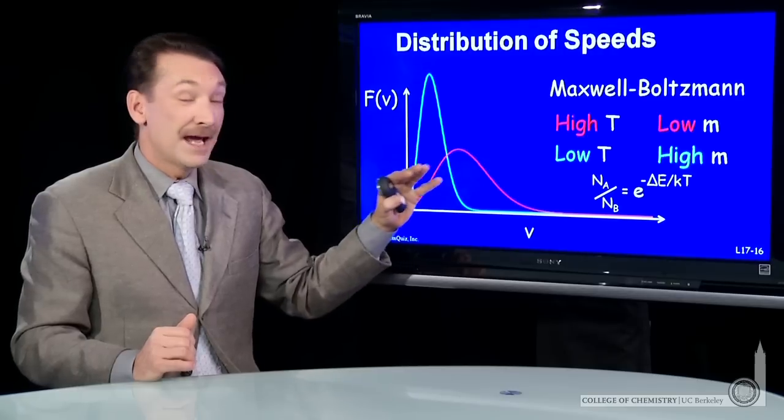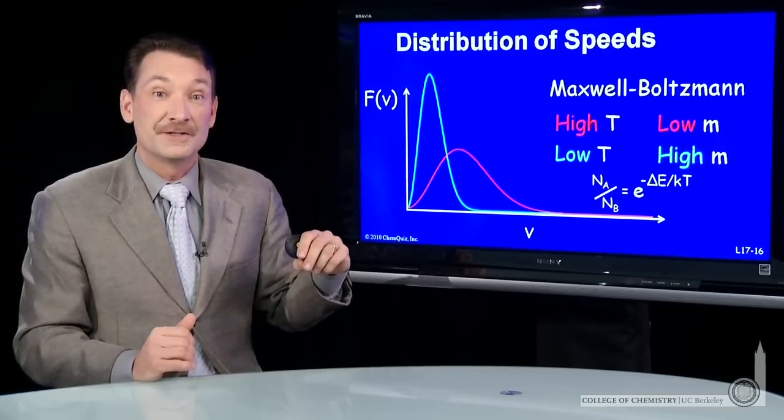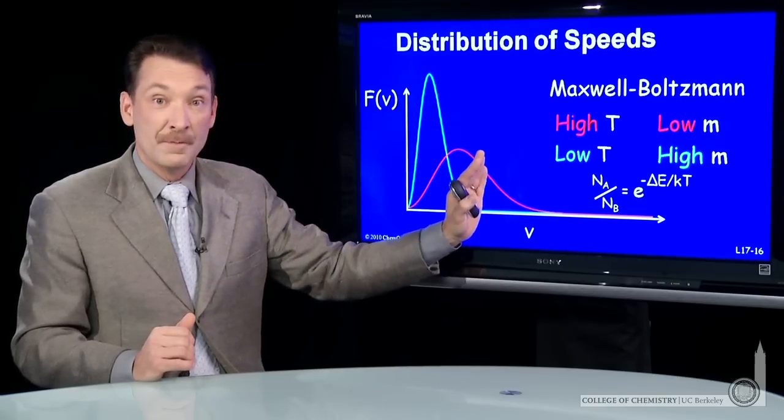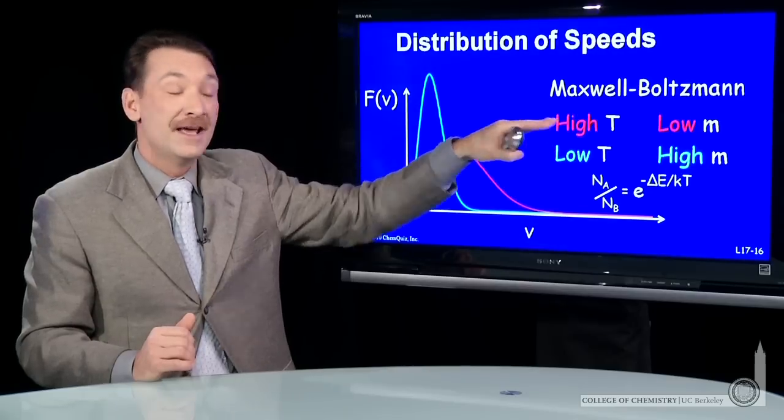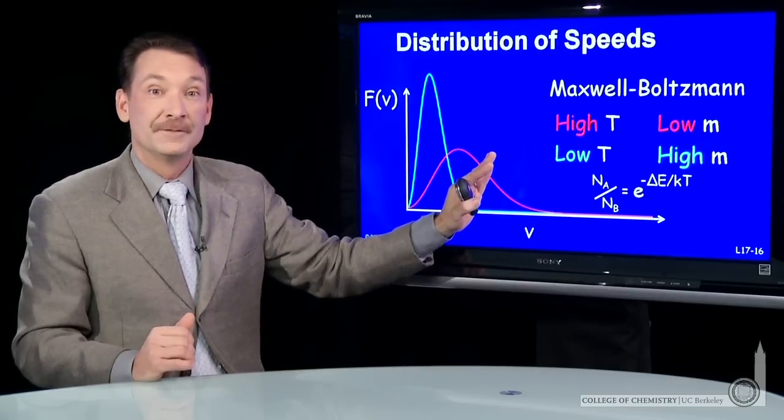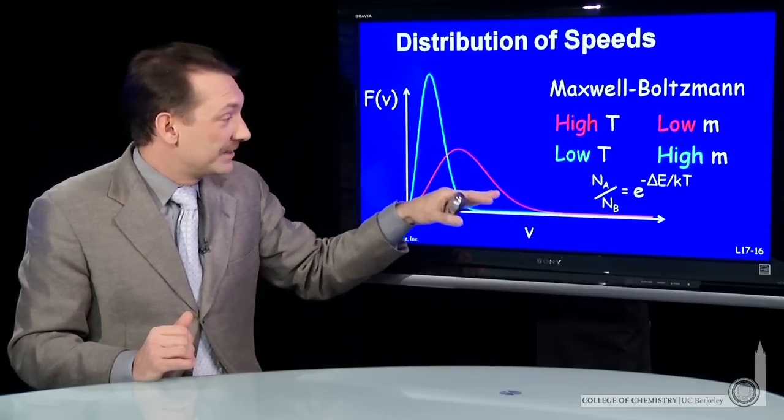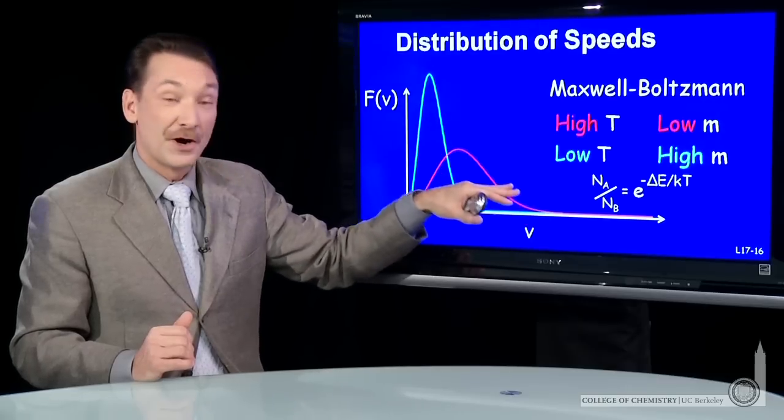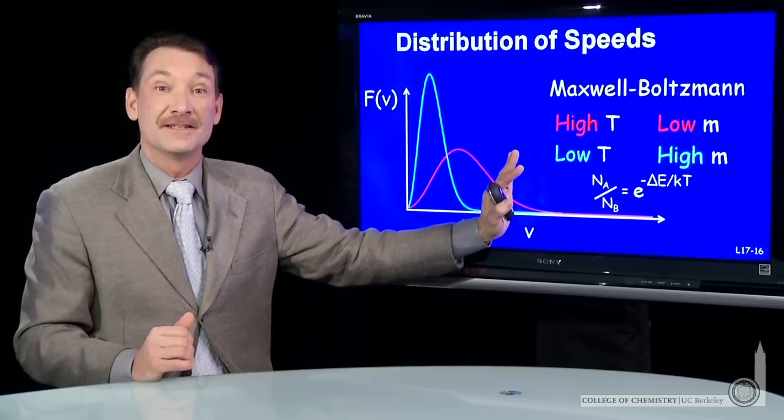These two samples have the same number of particles, but as you warm them or as you go to a lower mass, the distribution shifts. So you'll have still a greater number of particles here at relatively higher velocities.